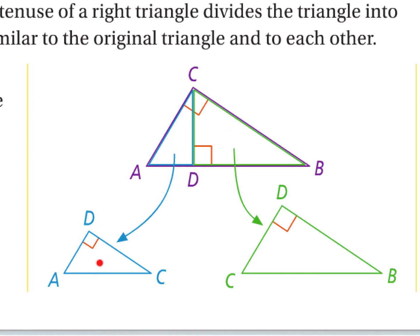I've got this blue one over here, which they flipped — the right angle is right here, and they've flipped it around so that's facing the same way as the others. And the same thing here with the green one, they flipped it around. Here's our right angle, which they've moved up. So we have two smaller right triangles and then the big right triangle — three right triangles total, and it just so happens that these are going to be similar right triangles.